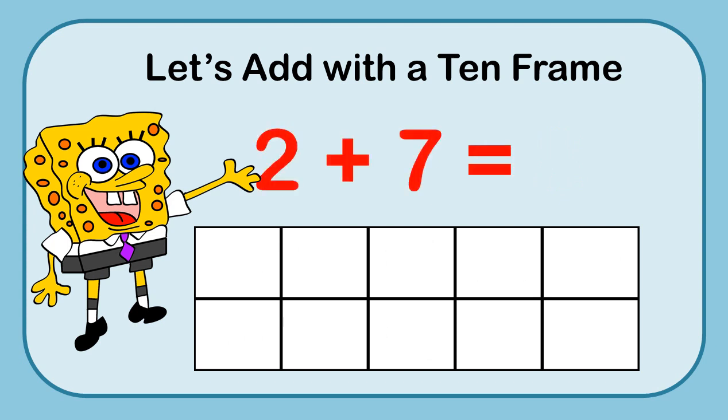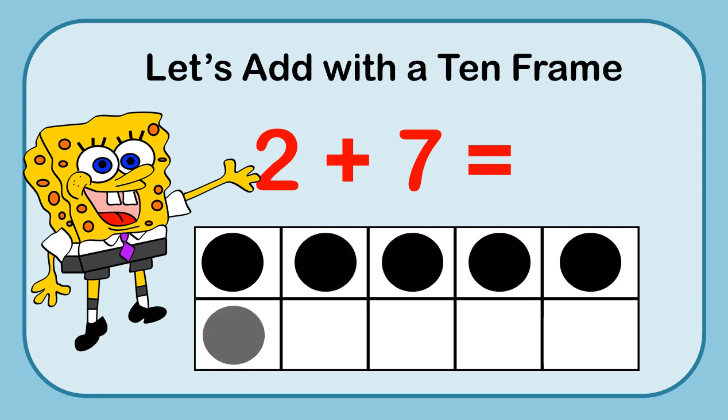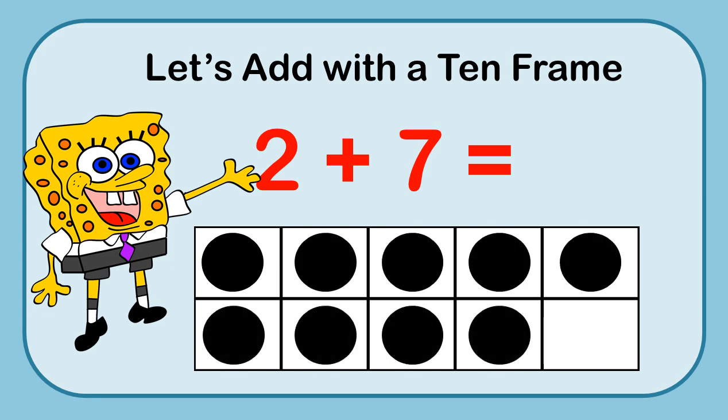Here's another one: 2 plus 7. Put our 2 markers and then 7 more: 1, 2, 3, 4, 5, 6, 7. I know that my whole 10-frame has 10 spots, but one spot is missing. So just by looking at this I should know the answer. The first line has 5, and counting up: 6, 7, 8, 9. Did you guess that? 2 plus 7 equals 9.